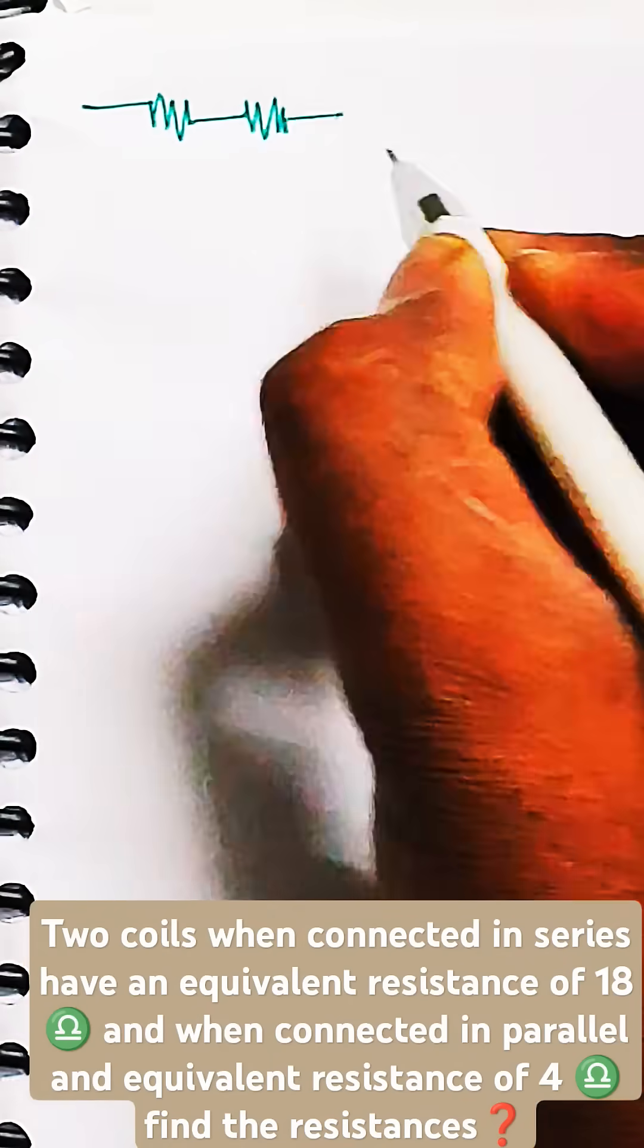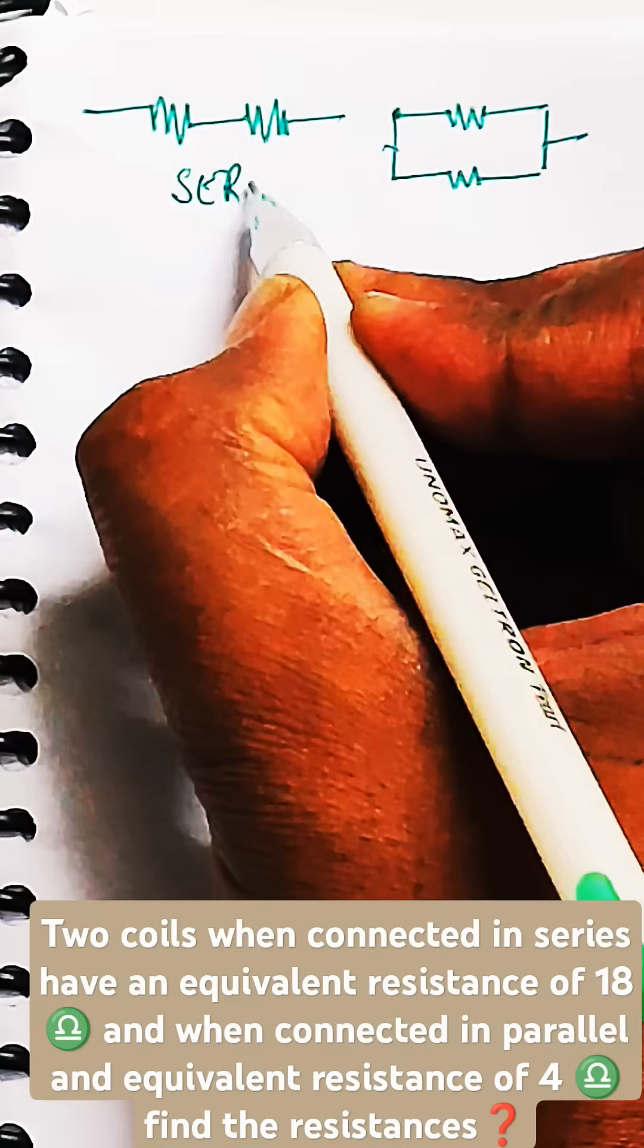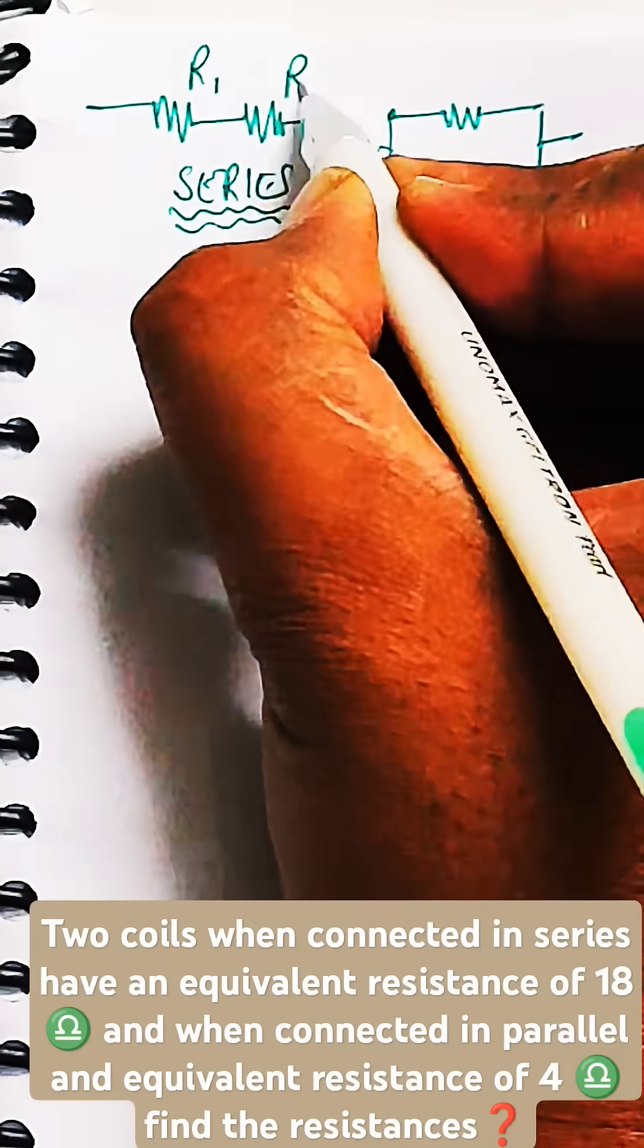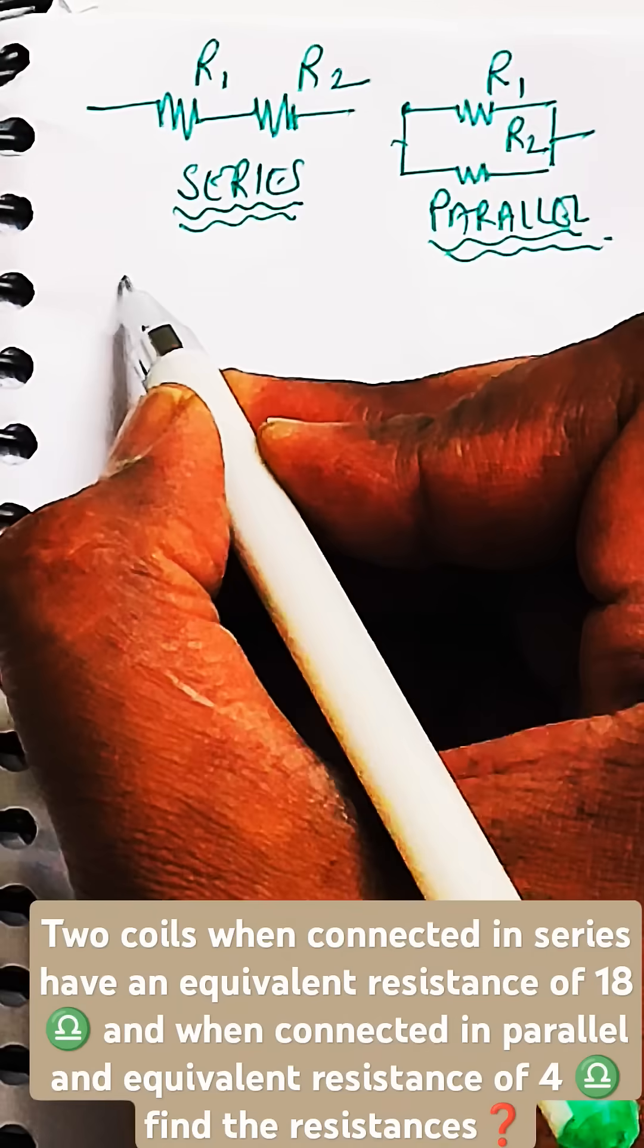In this question, it is given that two resistances are connected in series and in parallel. When they are connected in series, R1 R2 will be looking like this. When connected in parallel, R1 R2 will be looking like this.